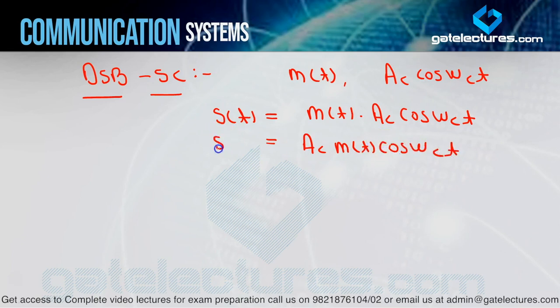This is the standard equation of DSB-SC — double sideband with suppressed carrier. You can see here there is only a single term, and in this term, the message signal m(t) is present — information is present because m(t) is there. There is no separate carrier-only term that was present in DSB-FC. So here we have suppressed the carrier, meaning the extra power due to the carrier term will no longer be used.